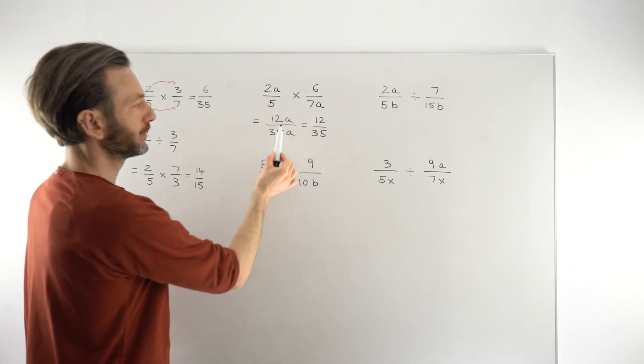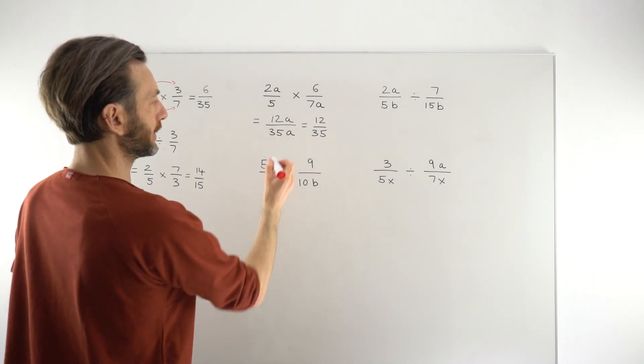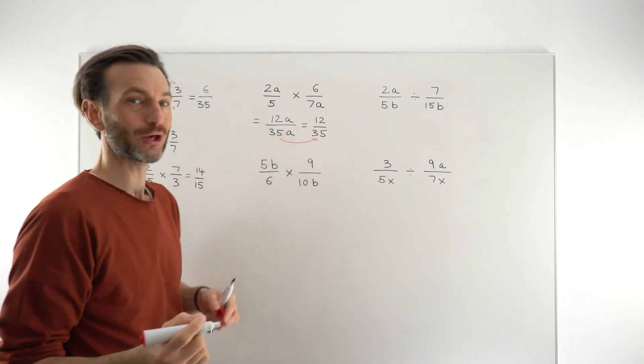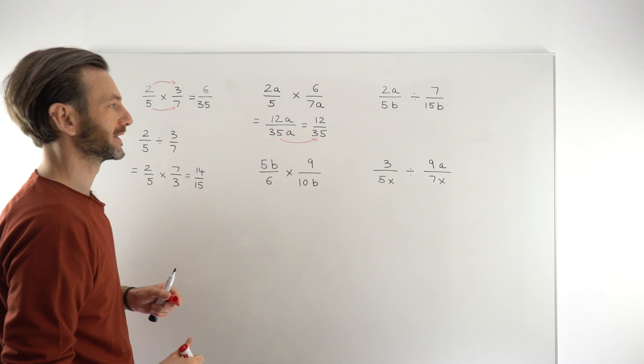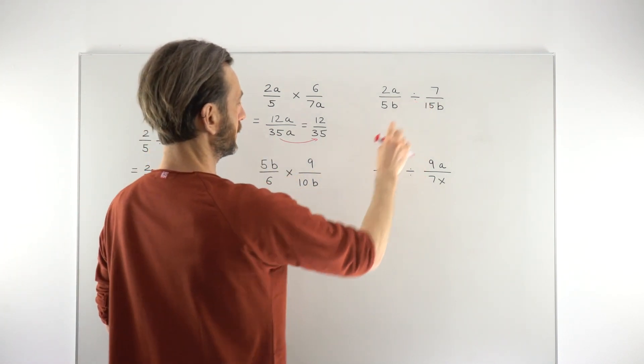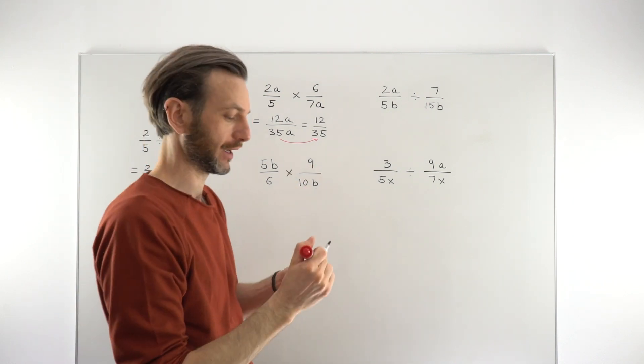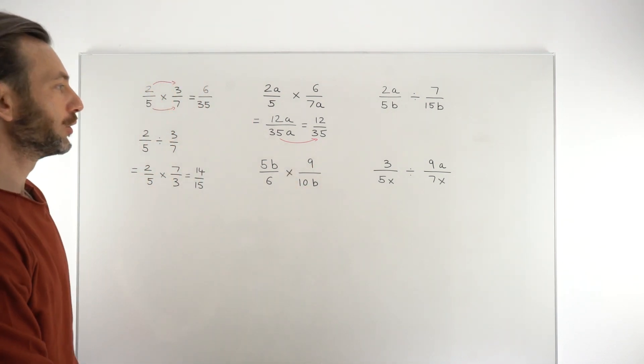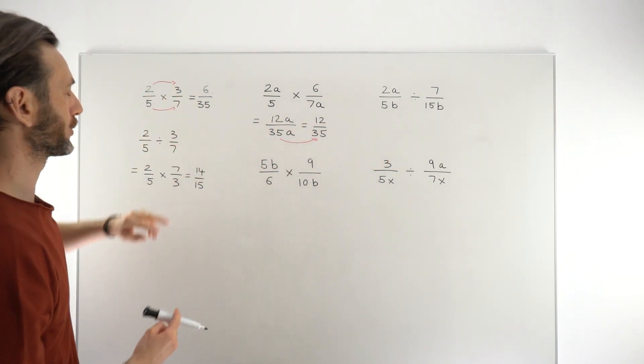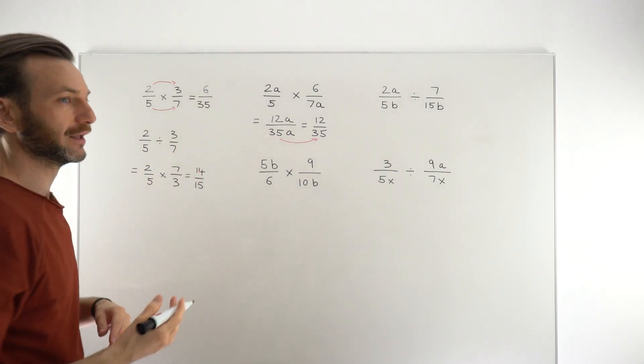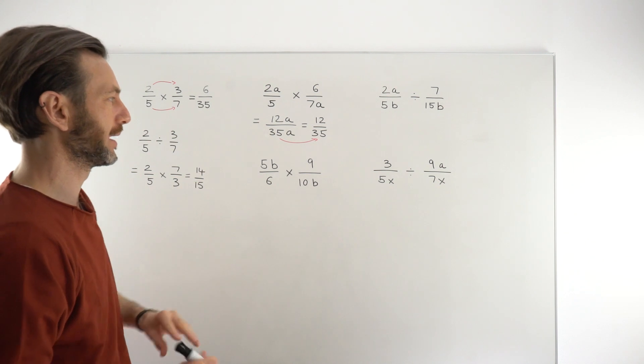If you're not quite sure about simplifying algebraic fractions, which is effectively what I've done there to get from here to here, then maybe check out the class on that first. Or it's a fairly straightforward technique, so if there's any simplifying to do in here, like that one there, just follow along. And if you're still not sure, then maybe check out that class afterwards. It's quite common for these guys to simplify at the end, just in the same way that numerical fractions quite often simplify. These guys did not, but in general, it's fairly common for them to simplify as your final step of working.